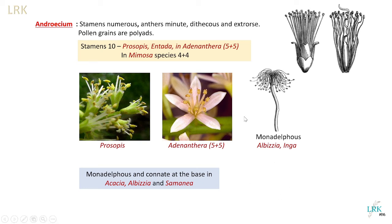Regarding the androecium, stamens are numerous in number. The anthers are very minute, dithecous, and extrorse — meaning they dehisce towards the outside. Pollen grains are polyads. In Prosopis, Entada, and Adenanthera, stamens are ten in number. In Adenanthera, they are arranged in two whorls — an inner whorl and an outer whorl. In Albizia and Inga, we have monadelphous stamens, where the filaments of the stamens are fused but their tips remain free.